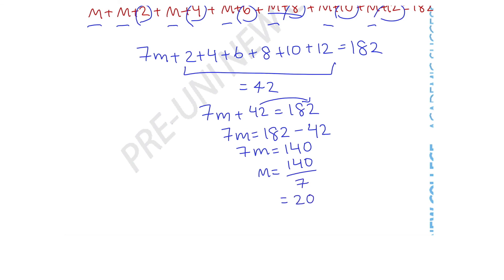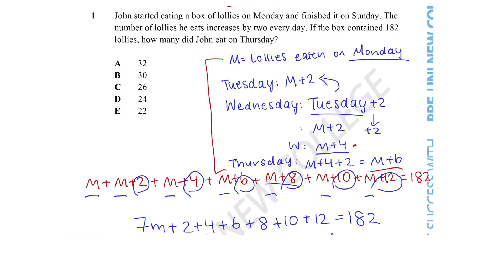Now that we have solved our unknown and found the number of lollies John ate on Monday, we can substitute this value into the equation for Thursday. Since Thursday equals m plus 6, and m equals 20, John ate 20 plus 6 equals 26 lollies on Thursday. Therefore, the answer is C.